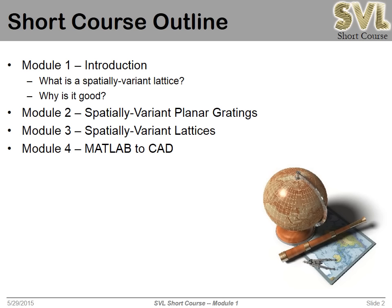In module three we talk about spatially varying lattices. We take the desired unit cell for the lattice, expand it using a Fourier transform into a set of planar gratings, spatially vary each of those planar gratings individually, then add them all up — that overall sum will be the spatially variant lattice. The last module covers how to get that out of MATLAB into a CAD package so we can look at it, manipulate it, 3D print it, or whatever.